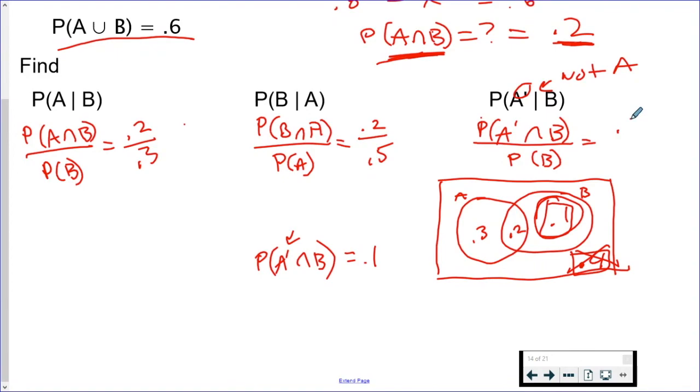So this equals 0.1. So now I say, this is 0.1 over probability of B. We said it was 0.3, which it is right there, 0.3. So I'll just put 0.3 in the bottom, reduce that, and that's your answer.